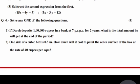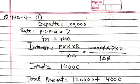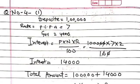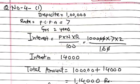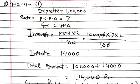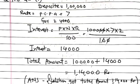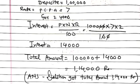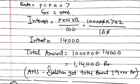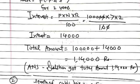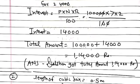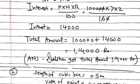Next is question number 4. There are two questions and you need to solve one. Read both questions carefully. Given information: deposit 1 lakh rupees, rate 7% per annum, time 2 years. Simple interest equals P into N into R upon 100, which is 1 lakh into 7 into 2 upon 100, giving interest equal to 14,000 rupees. Total amount equals deposit plus interest: 1 lakh plus 14,000 equals 1 lakh 14,000. Darshan received a total amount of 1 lakh 14,000 rupees after 2 years.